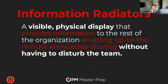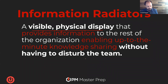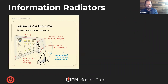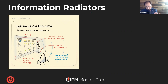Information radiators — instead of the person that radiates information, it's a place that radiates information. A physical display that provides information for the rest of the organization, enabling them to keep up-to-the-minute knowledge sharing without having to disturb the team. It might look like a common area — a hallway, a center of a room, somewhere where people have a lot of traffic. We've got a wall, let's use it. Make it big, make it visual, make it clear. Agile is all about transparency, inspection, and adaptation — this is the transparency part of it.